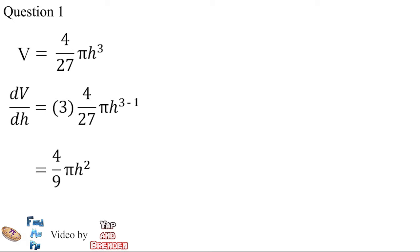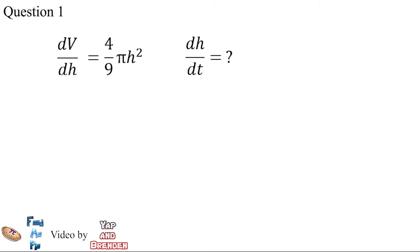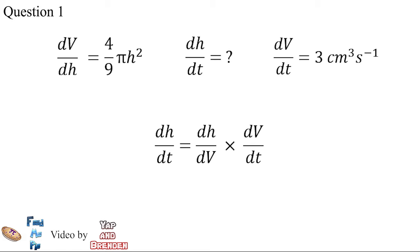In this question we have to find the rate of increase of the water level, which is dH/dt. From this question we know that dV/dt equals 3 cm³ per second. By using the chain rule, we can obtain dH/dt equals dH/dV times dV/dt.